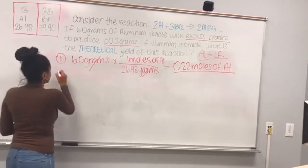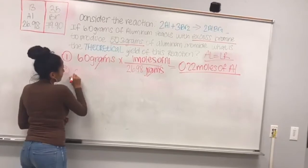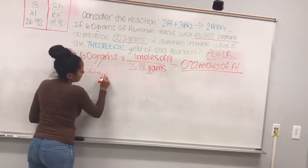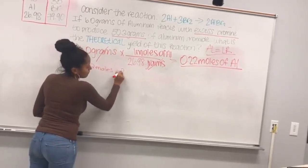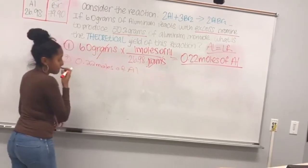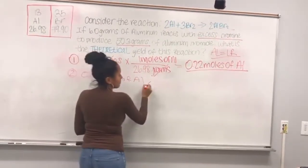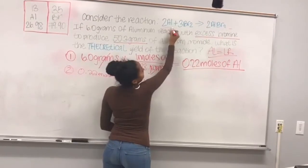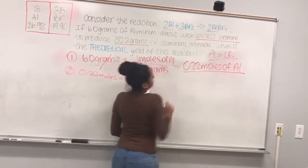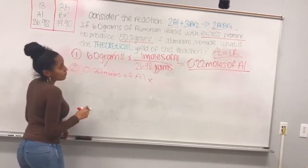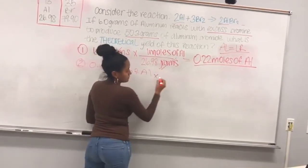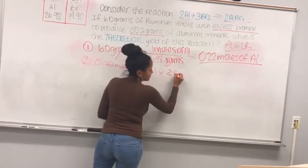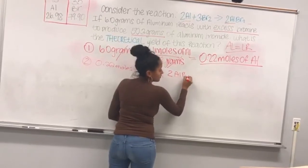Step 2: Now that we have 0.22 moles of Al, we multiply by the ratio of AlBr3 to Al. The ratio from the reaction is 2AlBr3 to 2Al.